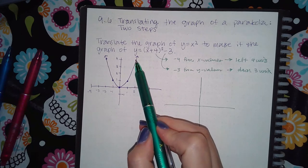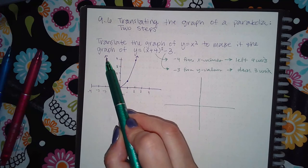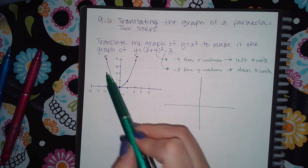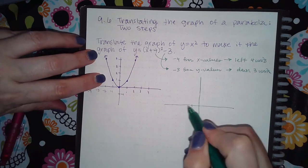So I'm going to take this point here and I'm going to move it to the left 4 units, and then I'm going to move it down 3 units, and so I end up here at negative 2 and 1.